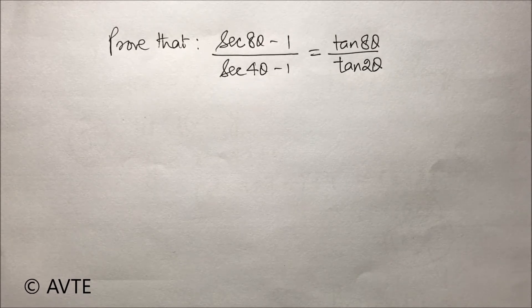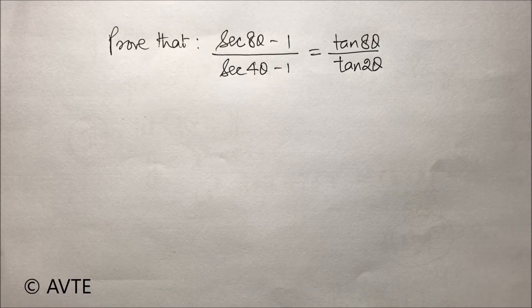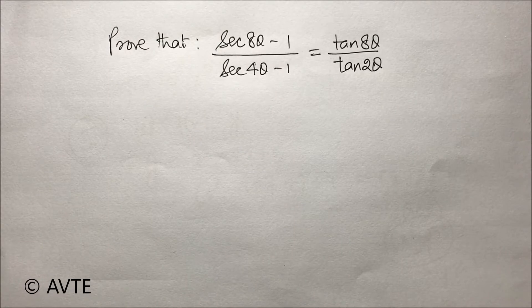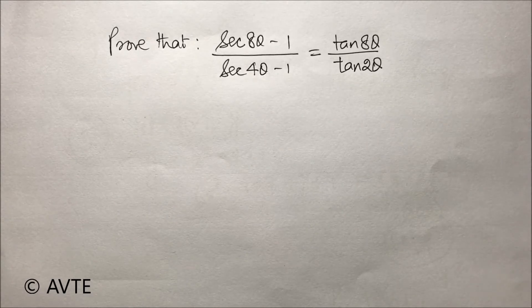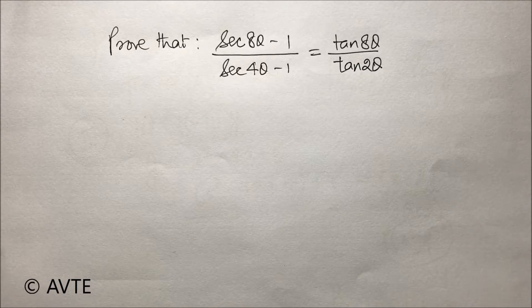This question alone is the revision of entire trigonometry because it will use half angle as well as multiple angle and obviously the concepts of junior classes. By looking at the question, the very first thing is that we should be writing secant 8 theta as 1 by cos 8 theta.